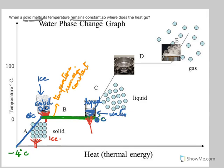Once the temperature reaches 100 degrees Celsius, again the temperature remains constant for some time. You have supplied heat but there is no rise in temperature — the temperature remains constant at 100 degrees. Something else is happening: the liquid water is about to change.